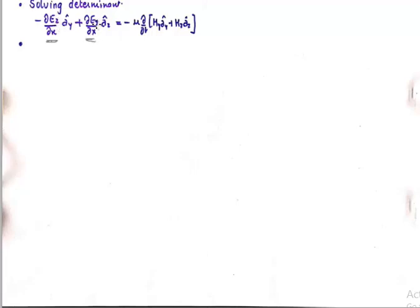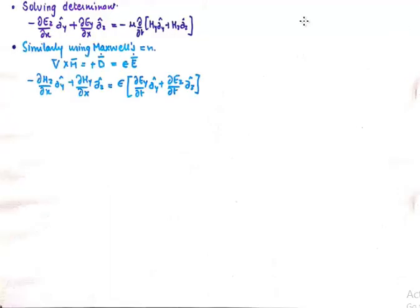When we solve the determinant, both components E_Z and E_Y are differentiated with respect to ∂/∂X on the left-hand side. On the right-hand side we rearrange, moving ∂/∂t inside, so we have ∂/∂t of H_Y â_Y and ∂/∂t of H_Z â_Z.